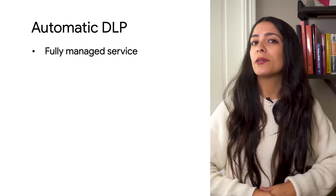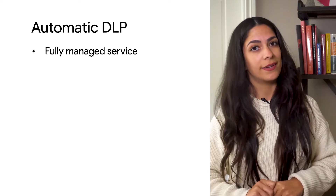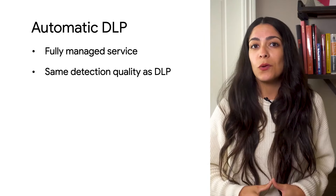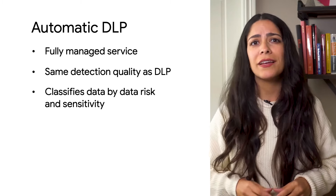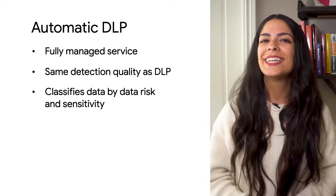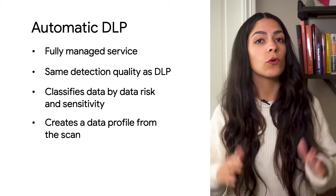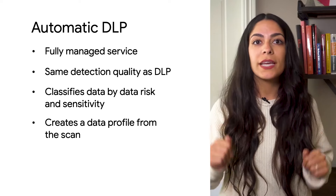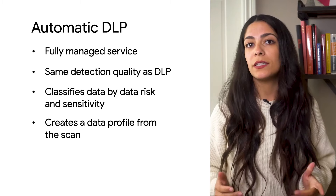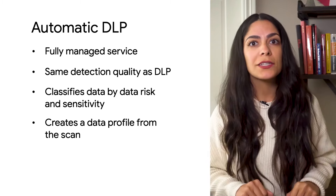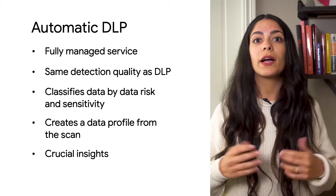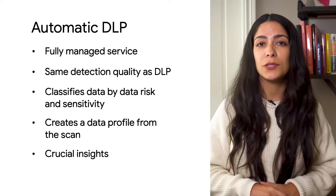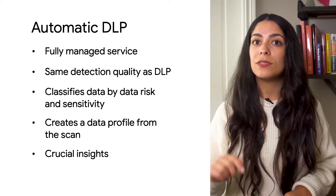So we made DLP automatic and developed a fully managed data profiling service that takes away that overhead and pain. It gives you the same detection quality as DLP and lets you protect data by identifying where sensitive and high-risk data resides automatically. It generates a set of metrics and insights — a data profile — from scanning the data. Among these metrics are the protected info types found in BigQuery tables, free text score, and data risk level, giving you crucial insights into what kind of at-risk data you are currently storing and allowing you to take the appropriate steps to protect it.